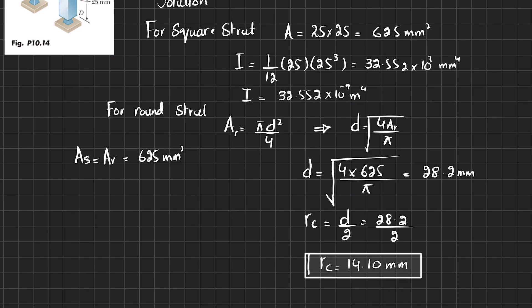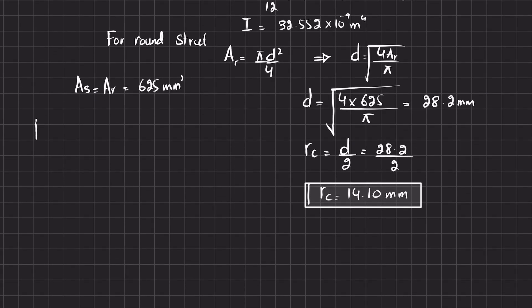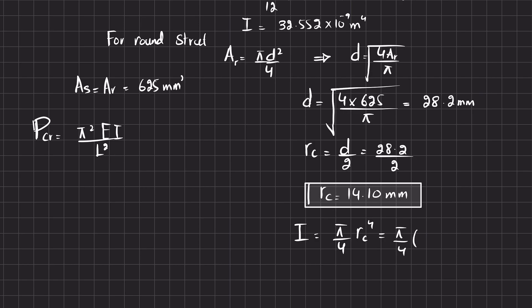The critical load is given by Euler's formula: P_cr = π²EI / L². We now calculate the moment of inertia for the round strut: I = (π/4) × r⁴ = (π/4) × (14.10 × 10⁻³)⁴, which gives I_round = 31.085 × 10⁻⁹ m⁴.